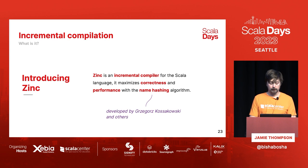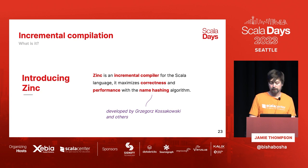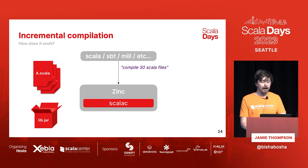In current build tools such as SBT, Mill, and Scala command, we use something called Zinc, which is the name of the incremental compiler. It basically maximizes correctness and performance with something called the name hashing algorithm, which was developed by a contributor and others.